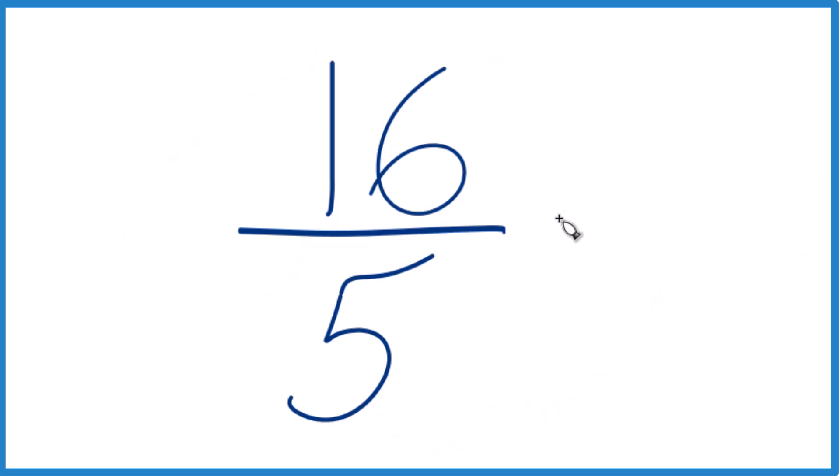So let's try to simplify it first. We need to find a number that goes into both 16 and 5 evenly. The thing is, the only number that's going to go into both 16 and 5, the only whole number, is 1.